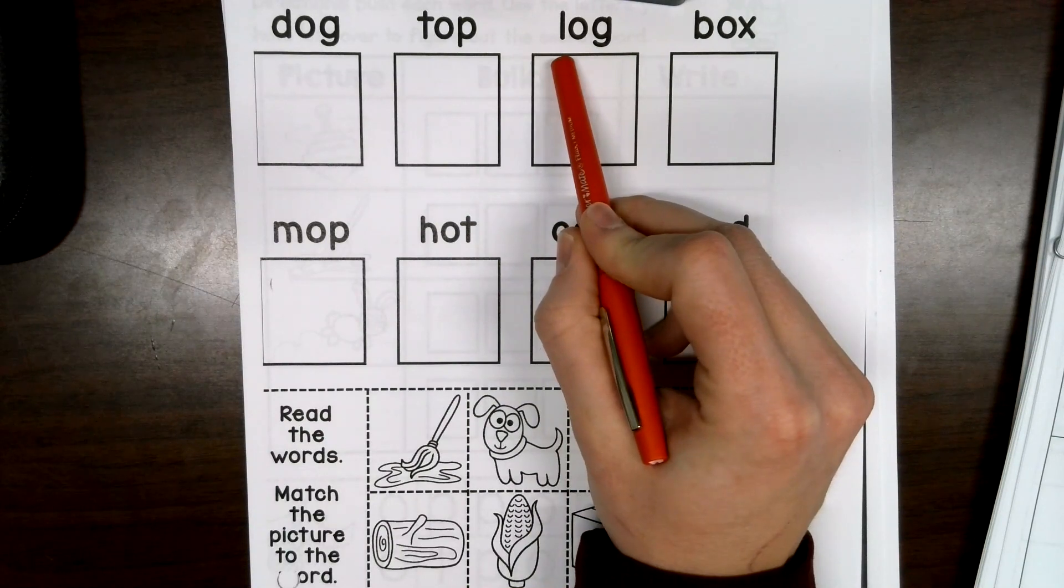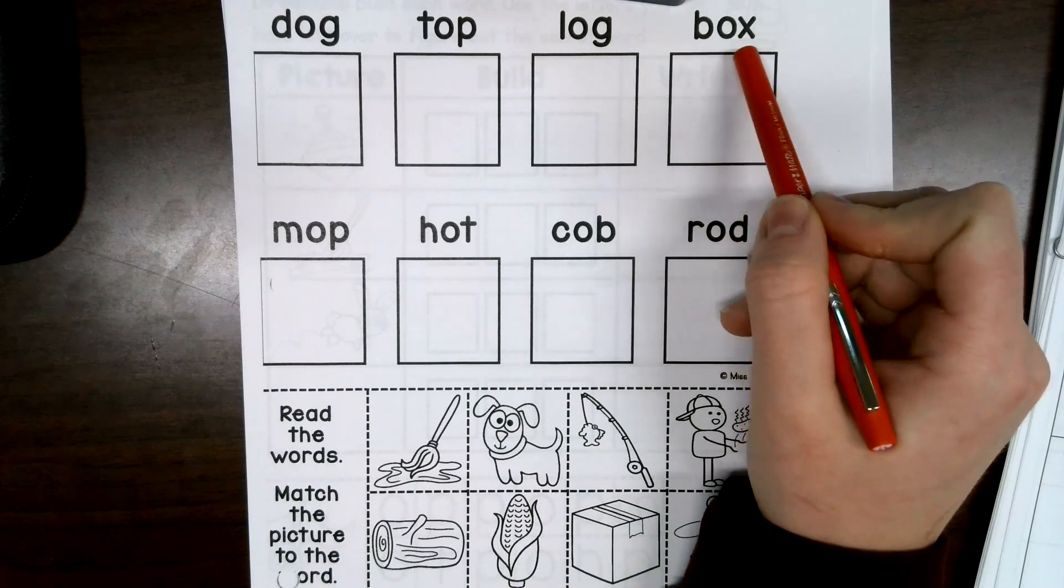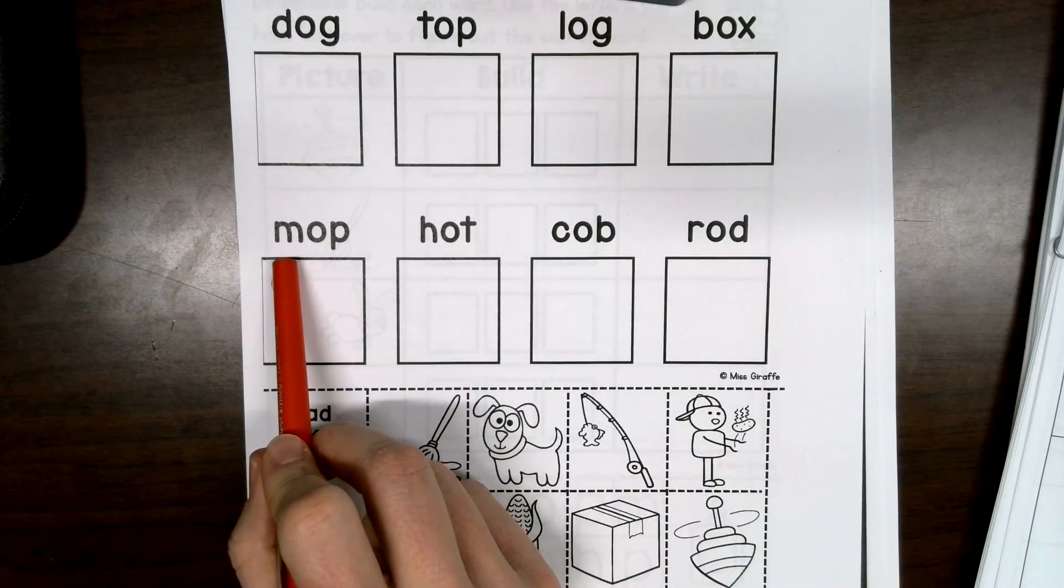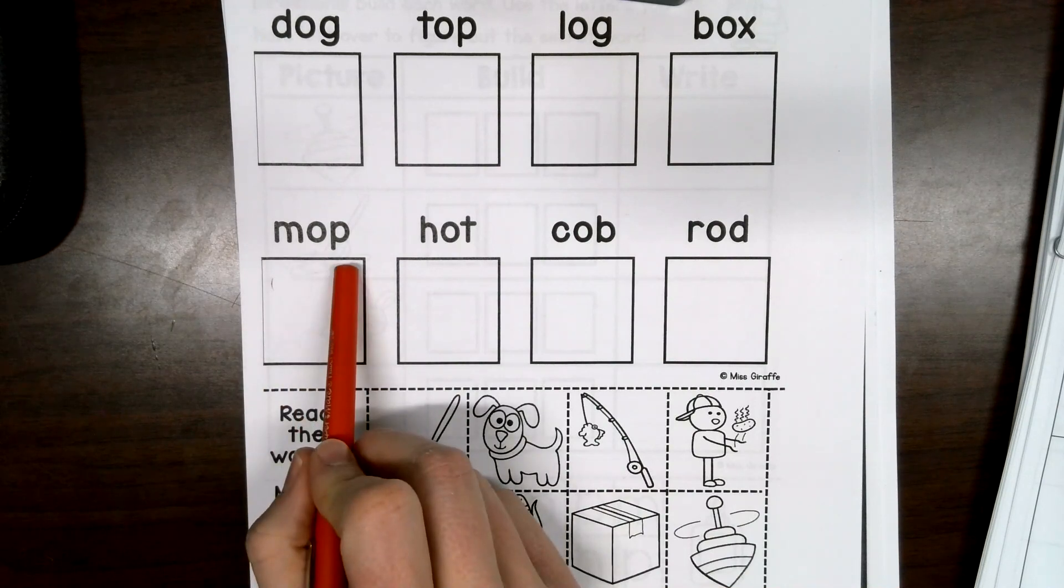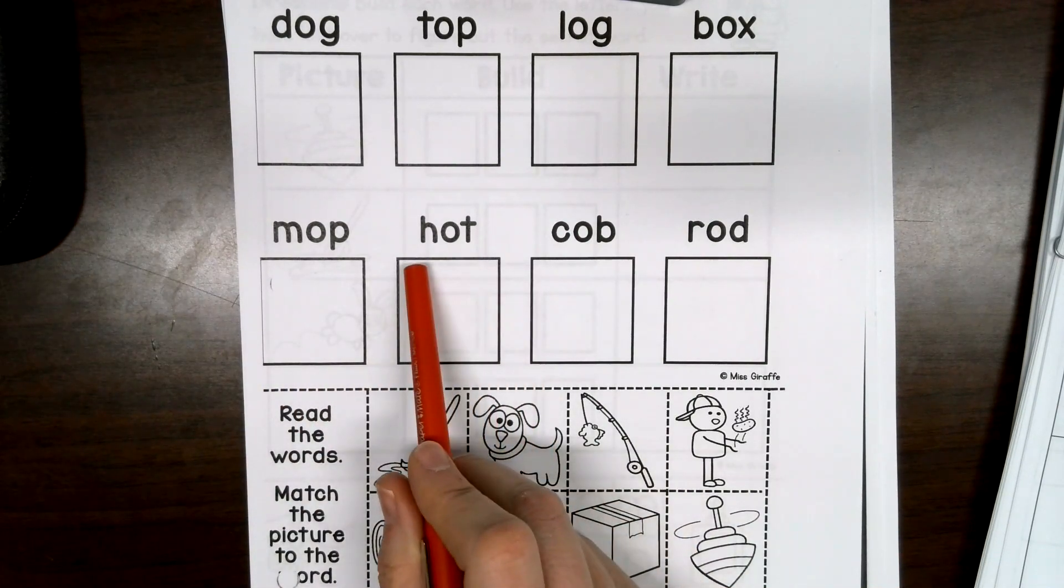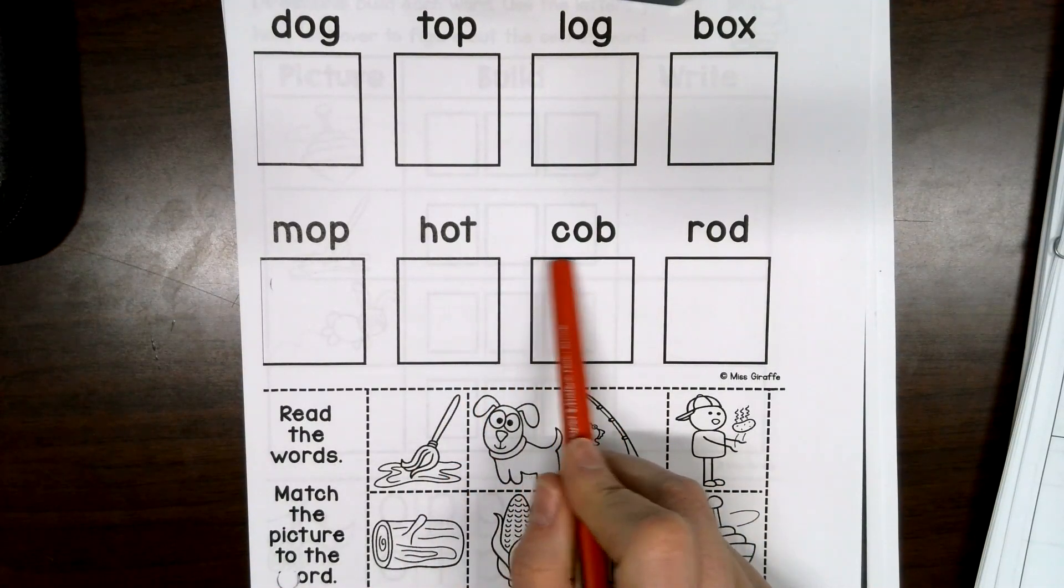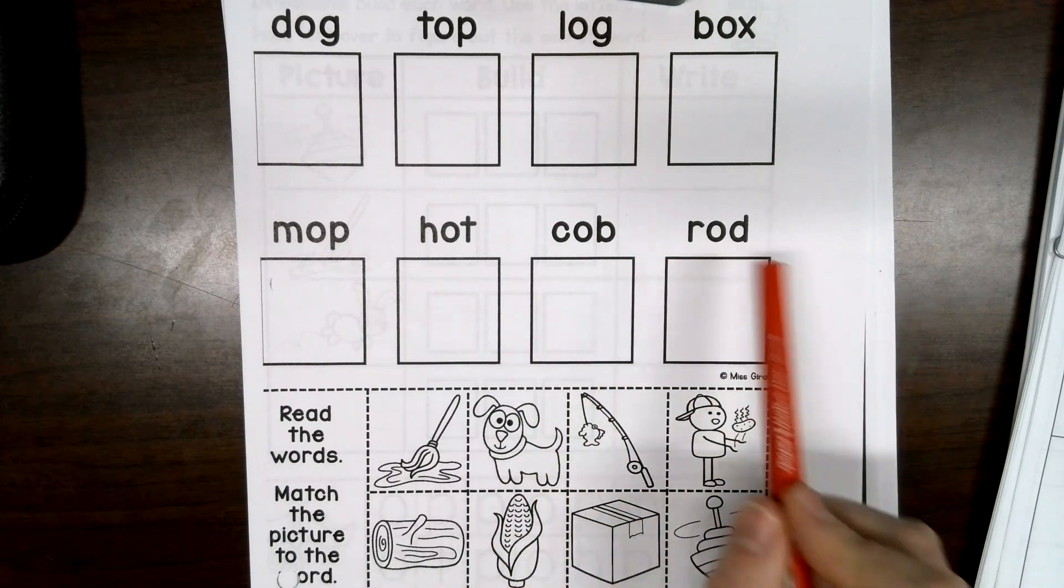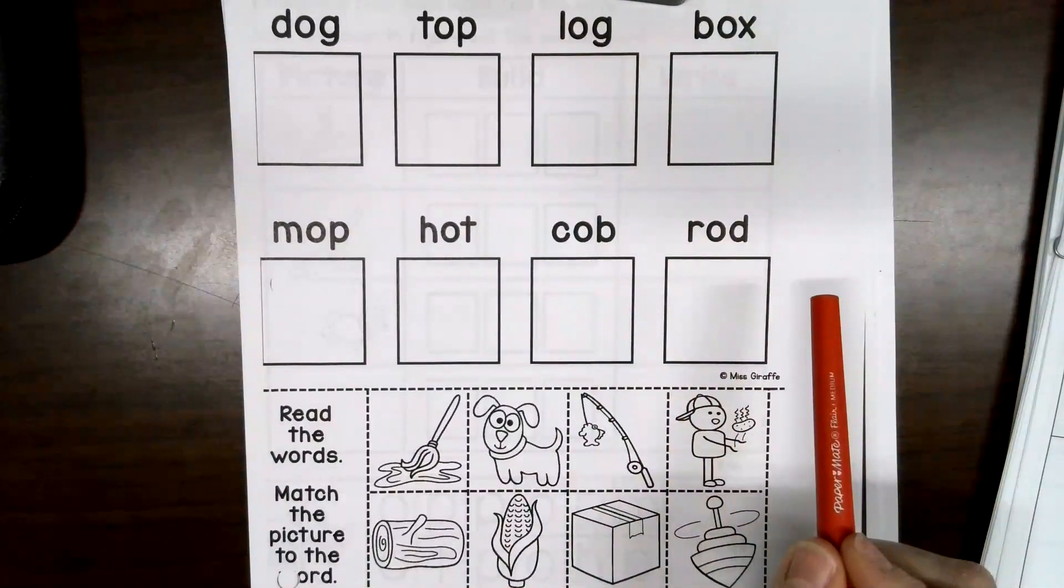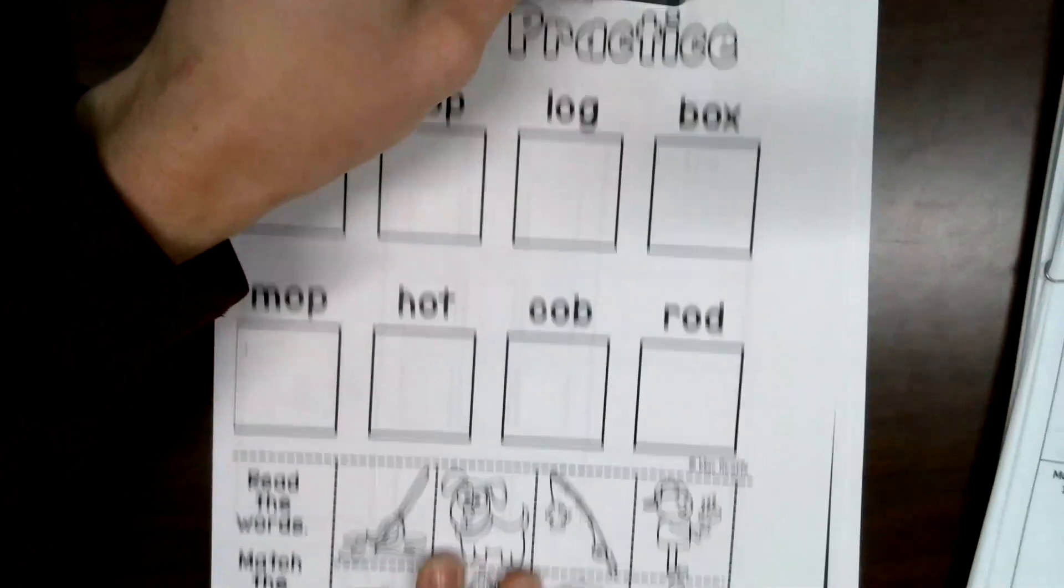So we've got l-o-g, log. Read these with me. B-o-x, box. M-op, mop. H-o-t, hot. C-o-b, cob. R-o-d, rod. Okay? So glue them in. Pause video here. Do that. Hit play when you're ready to move on.